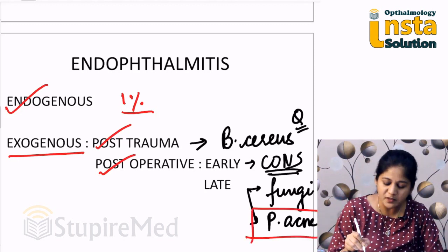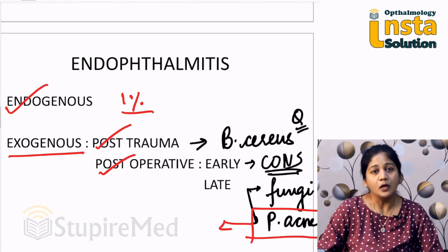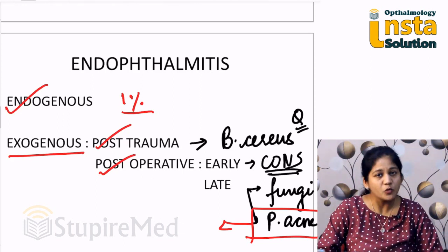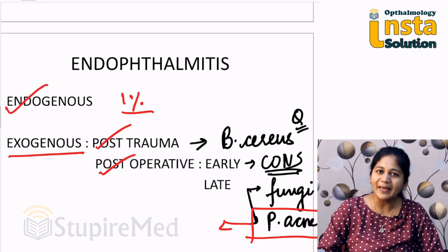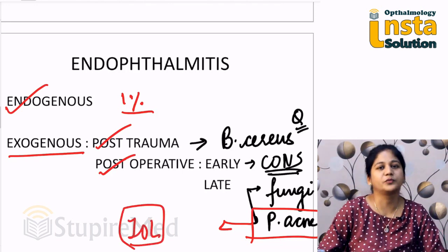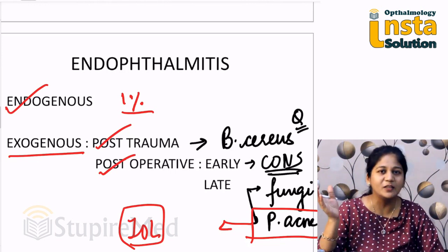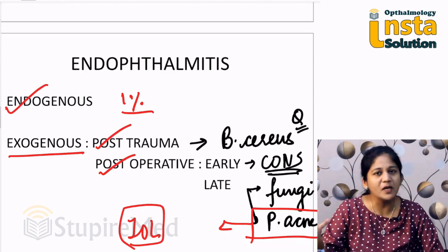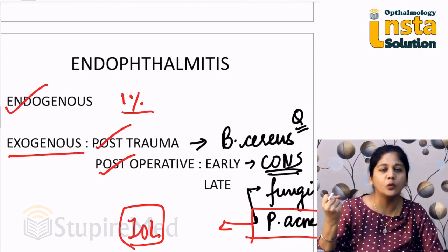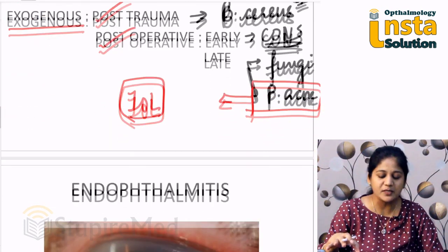Something very special about Propionibacterium acnes and late endophthalmitis: when you have endophthalmitis in the late post-operative period caused by Propionibacterium acnes, you may develop a plaque on the lens itself. This plaque is the sign that tells you this is such a case. While performing vitrectomy in these patients, you may also have to explant the IOL.